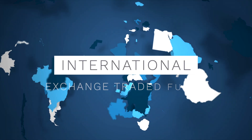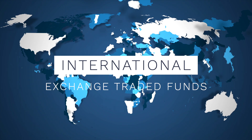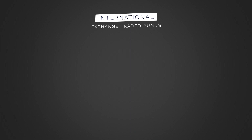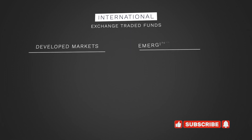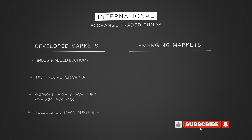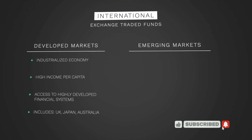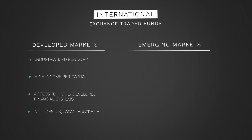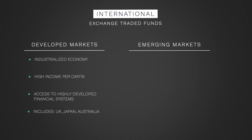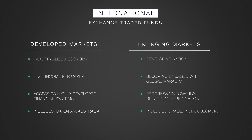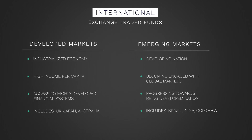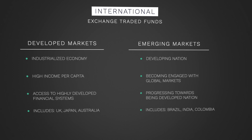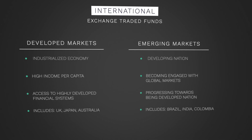Our next type of fund is International ETFs. International ETFs track the index of non-U.S. countries or group of countries. These funds can further be divided to include developed markets and emerging markets. Developed market countries are typically industrialized economies that have a high income per capita and access to highly developed financial systems, such as the United Kingdom, Japan, and Australia. An emerging market is a developing nation that is becoming more engaged with global markets — beginning to show signs of becoming a developed market, but not quite there yet.